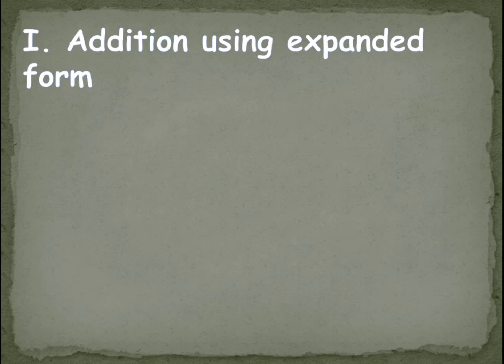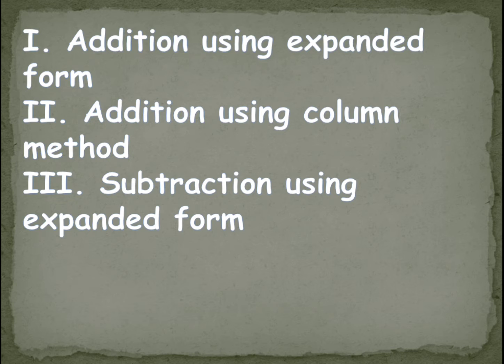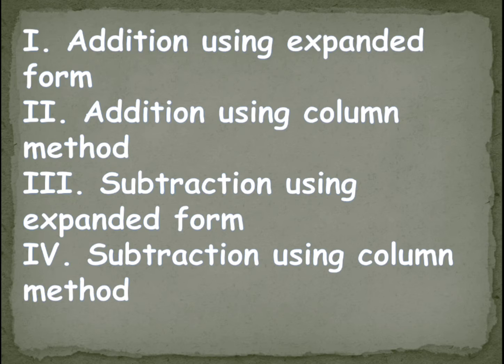The first bit is addition using expanded form. Here, children, you will get expanded form addition without regrouping and also with regrouping. Next is addition using column method — here also with regrouping and without regrouping. Next you have subtraction using expanded form — here also grouping and regrouping — and then subtraction using column method, with grouping and without regrouping.